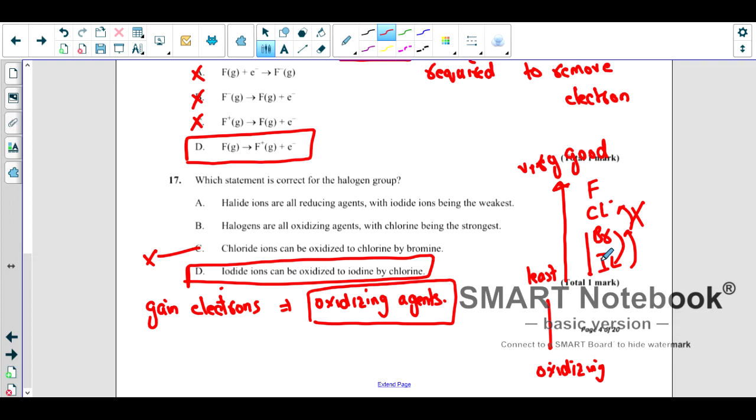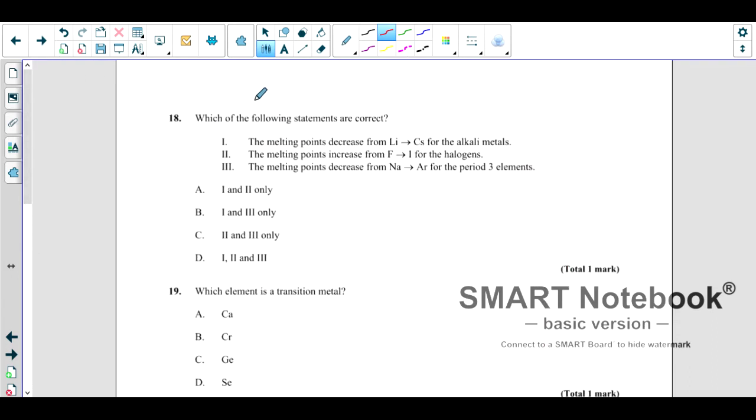Which of the following statements are correct? Lithium to cesium, the melting point decreases. Yes, it is true. Why? Because the size increases, the radius increases, so melting point decreases. The melting point increases from F to I for halogens. Yes, it is true because the intermolecular forces increase. The melting point from sodium to argon for period three element, no it will not decrease. Why? Because the radius will decrease when you're going from left to right. Atomic size or radius decreases, which means strong force of attraction. To break it you need high energy, so melting point will also increase. So the correct answer is one and two.